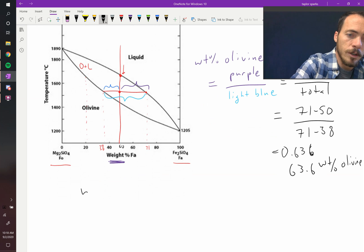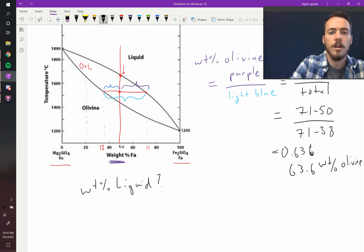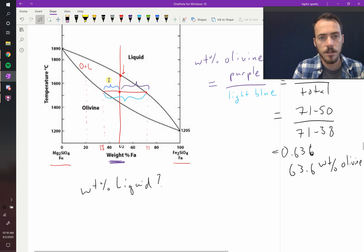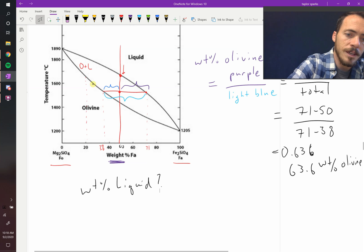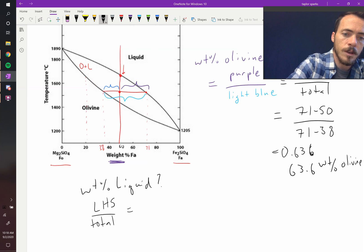To do the weight percent liquid, the weight percent liquid would just be the exact opposite. We're going to now take the dark blue divided by the light blue section. So, it's going to be the left-hand side, the left-hand segment, divided by the total. Okay? So, that's going to be 50 minus 38, all divided by 71 minus 38.